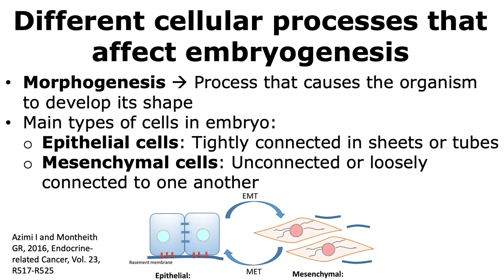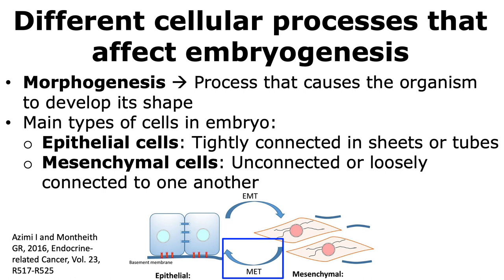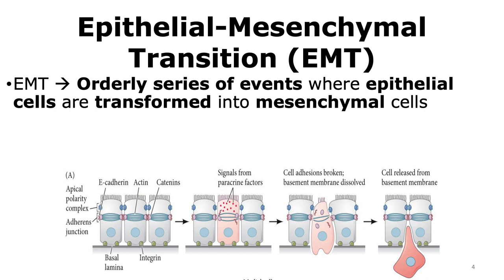Epithelial cells can become mesenchymal cells through a process called epithelial mesenchymal transition. Similarly, mesenchymal cells can become epithelial cells through a process called mesenchymal epithelial transition. During epithelial mesenchymal transition, there is an orderly series of events whereby an epithelial cell is transformed into a mesenchymal cell.